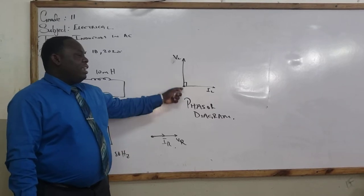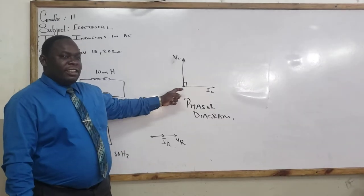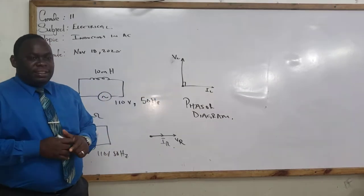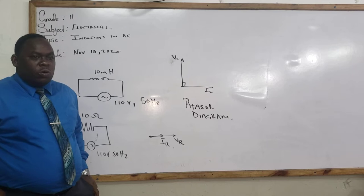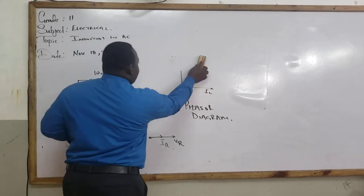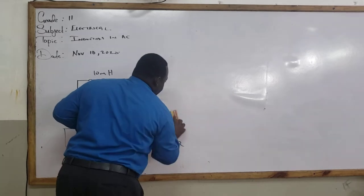But then now you notice, now we are dealing with the inductive AC circuit. VL leads the current by angle of 90 degrees. So we cannot say that they are in phase, they are out of phase by 90 degrees.